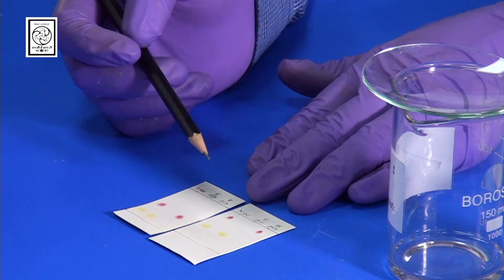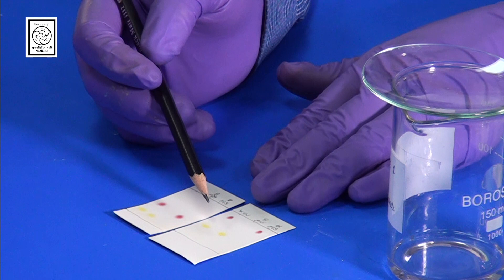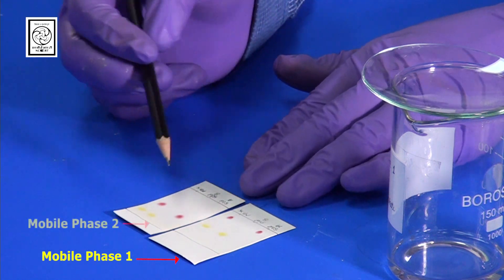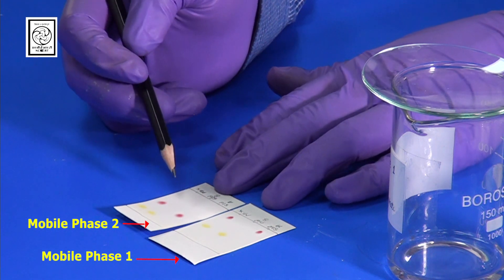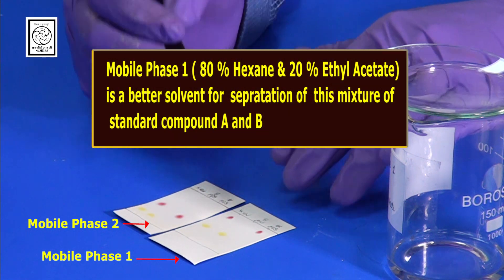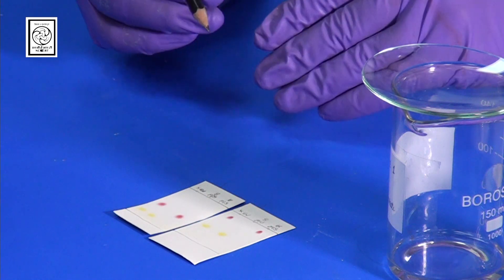As both the components are colored — one is red and another is yellow — we can clearly see that the separation is much better in mobile phase one, which contains only 20% ethyl acetate. Mobile phase two, which contains 50% ethyl acetate and 50% hexane, also shows separation but it is less distinct. So mobile phase one is a better mobile phase for the separation of this particular mixture. If compounds are not colored, we observe the TLC under UV light, or stain it with a dye or iodine. Using a UV chamber is the most common method today. If the TLC plate contains a fluorescent dye, the silica gel will fluoresce and the compounds will appear as dark spots under UV.